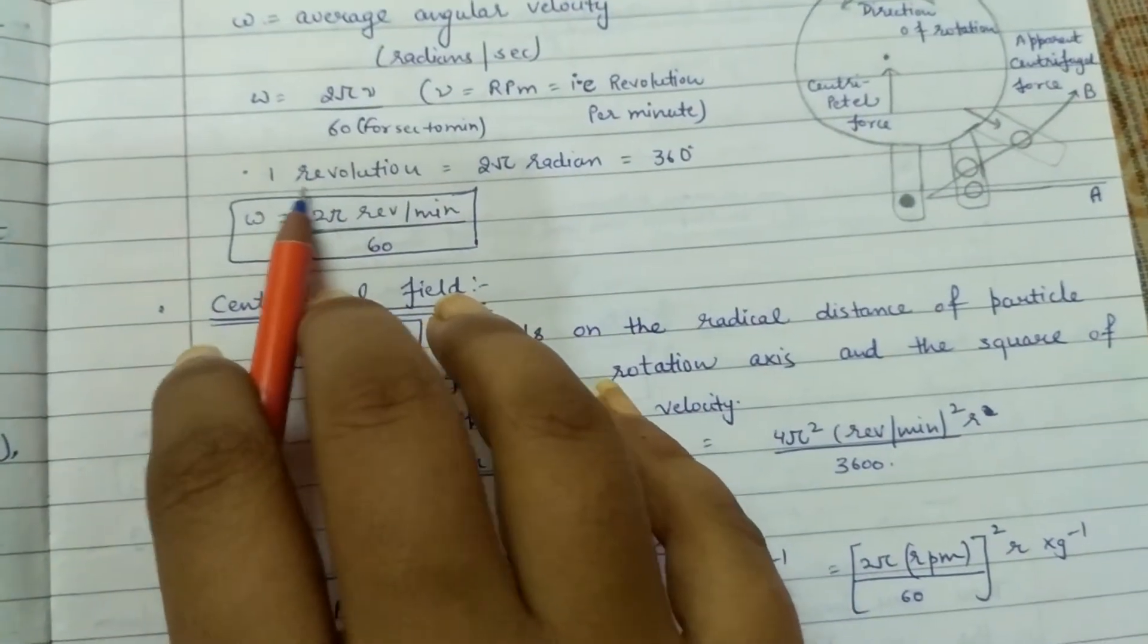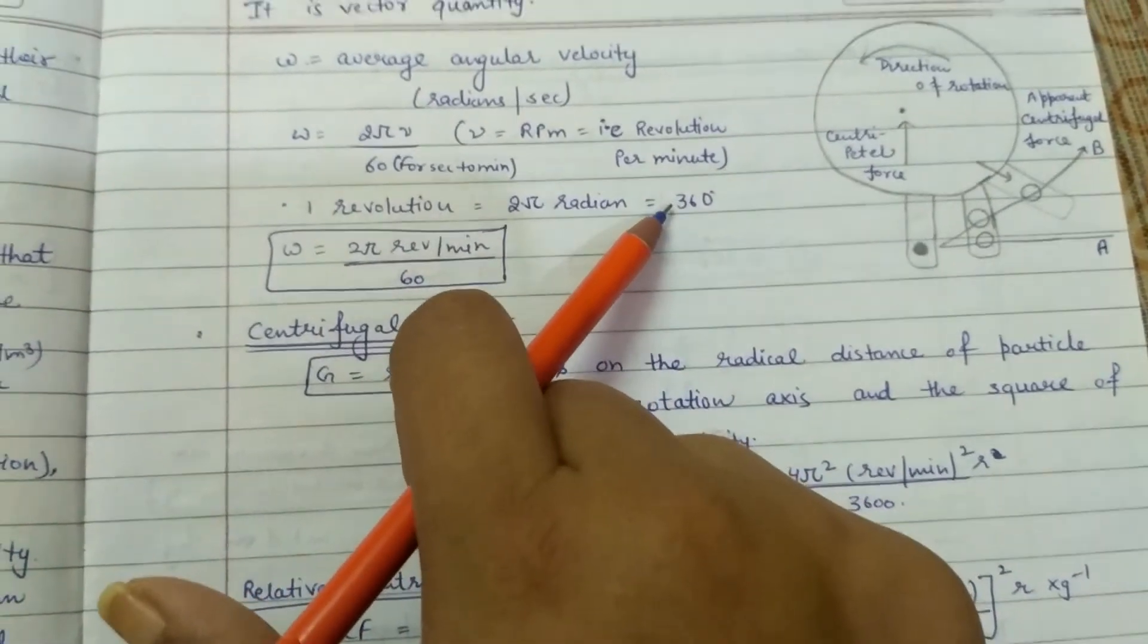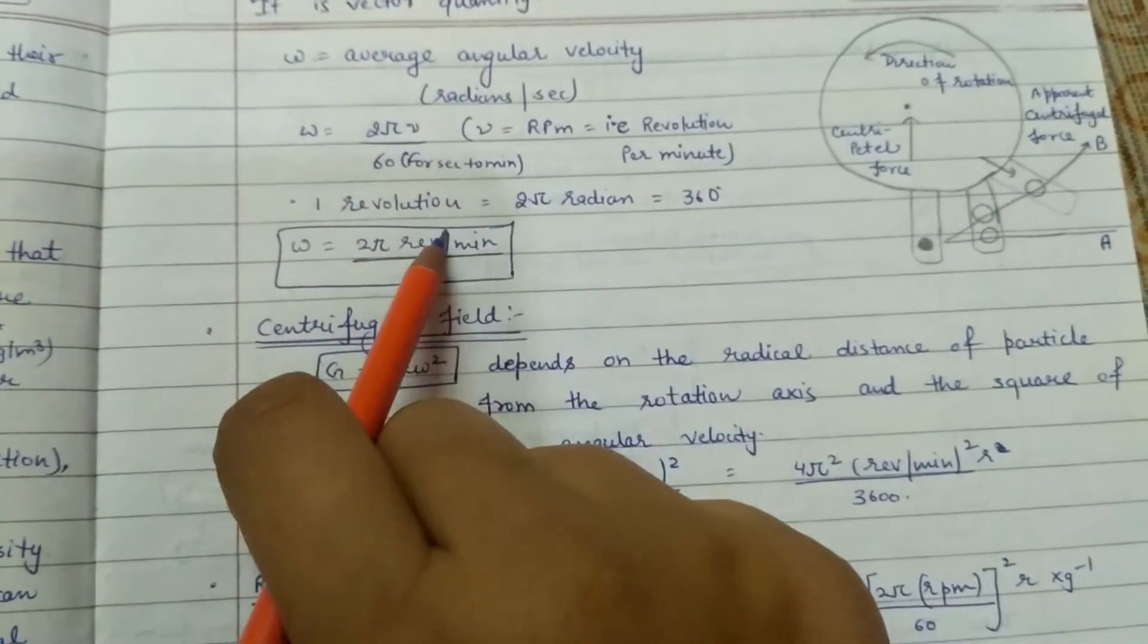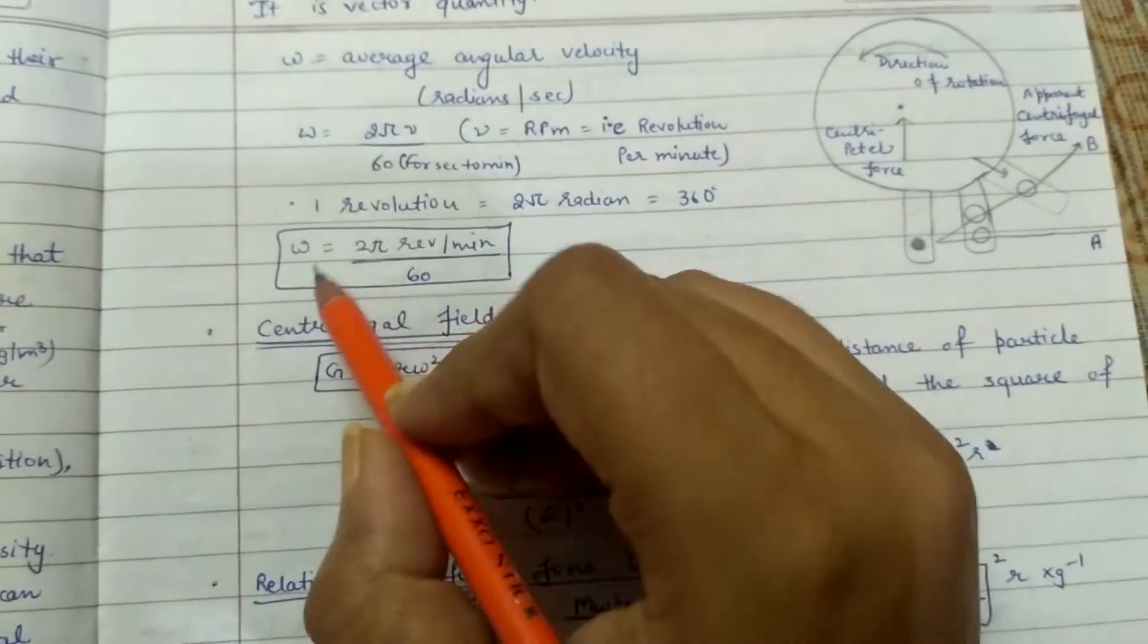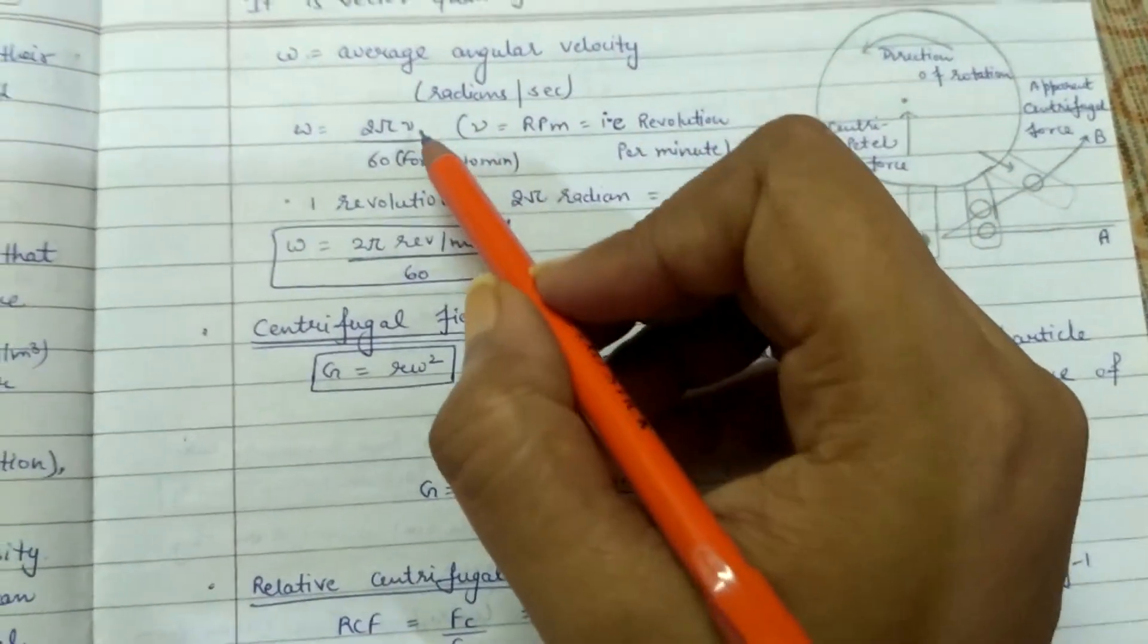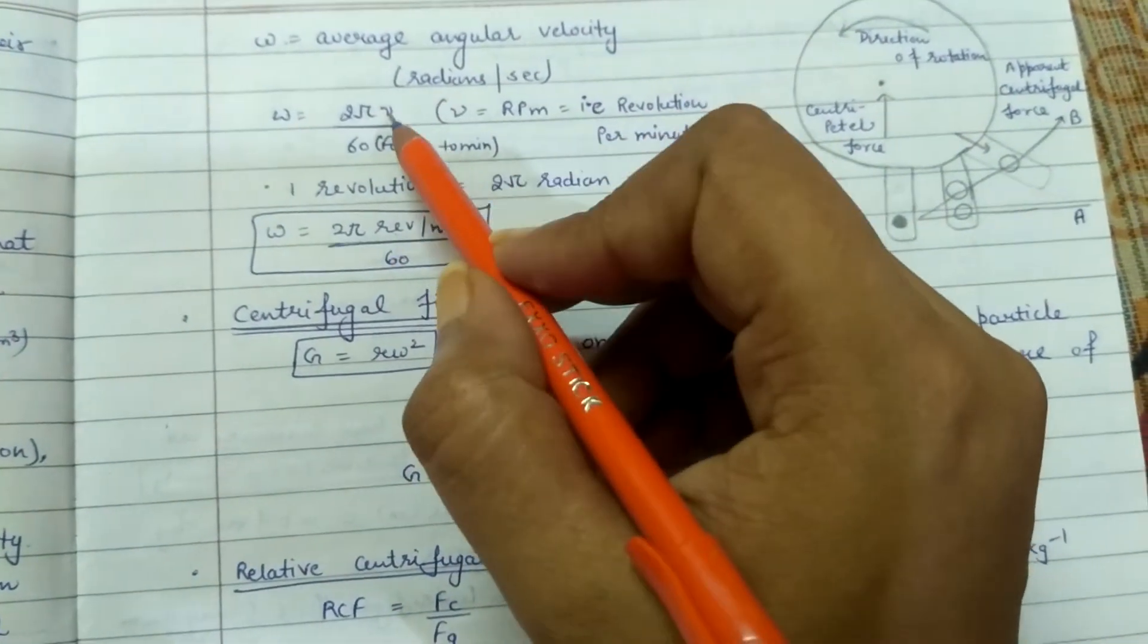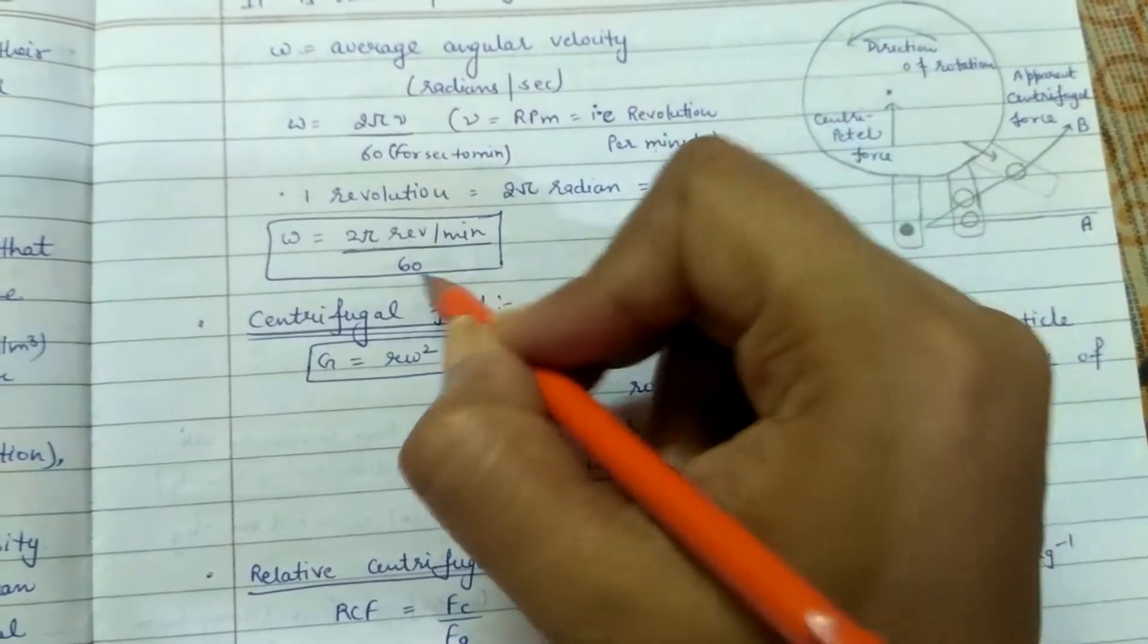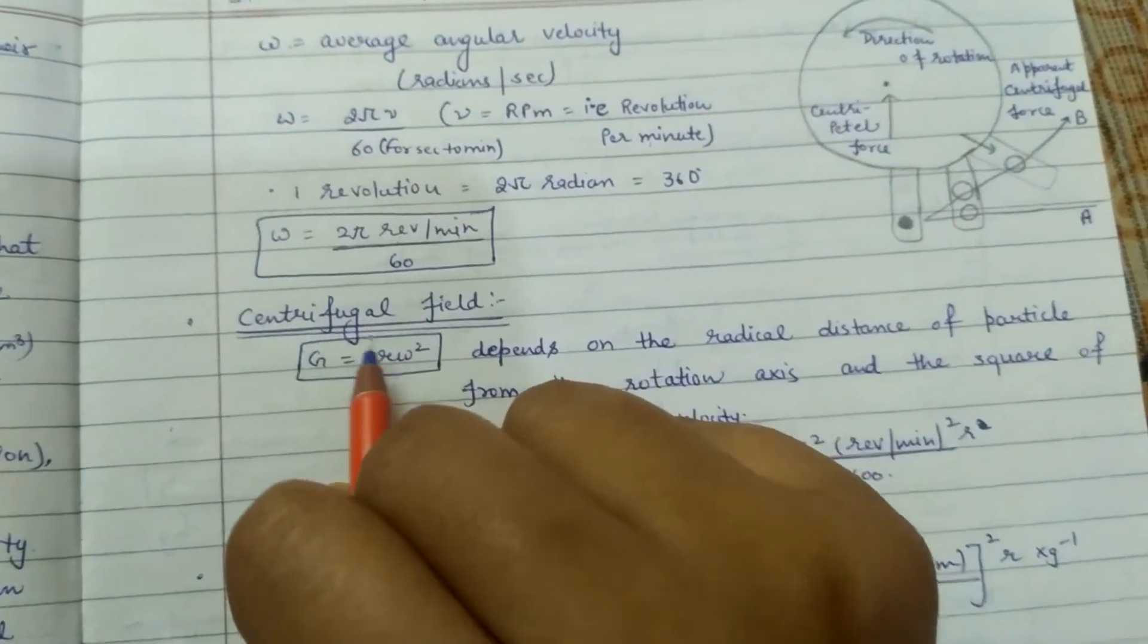One revolution equals 2 pi radians, which equals 360 degrees. So omega equals 2 pi mu over 60, where mu is revolution per minute divided by 60.